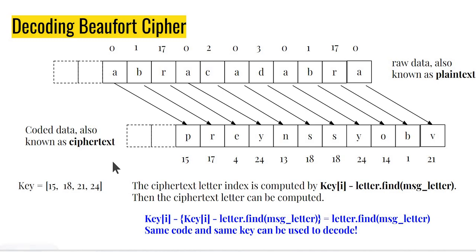Remember, the way that Beaufort Cipher worked is that I had a key. I basically did the key minus the position of the letter and that gave me my ciphertext. So, for example, 15 minus 0 is 15, 18 minus 1 is 17 and so on and so forth.